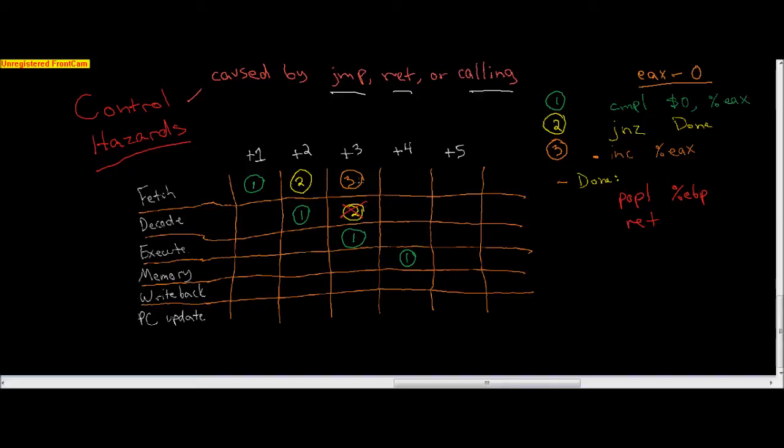So this was incorrect. Now that this thing is past the execute stage, we'll know which jump we're supposed to take. Then we can pass this into the fetch stage. The solution for this would be to insert two NOPs. This is a control hazard caused by a jump.